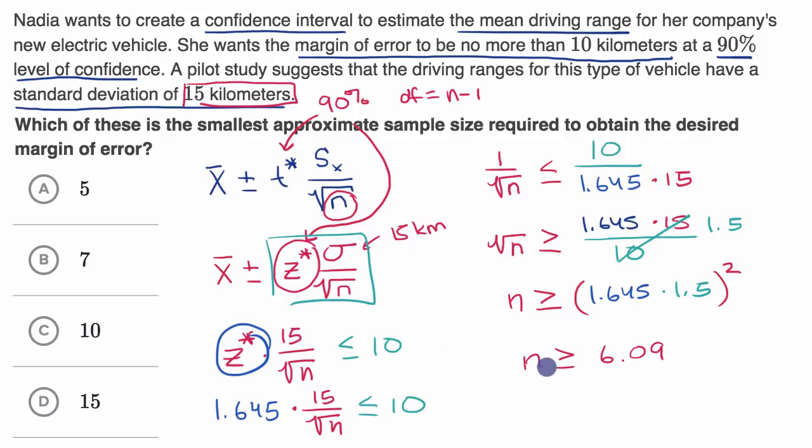And of course our sample size needs to actually be a whole number. So what's the smallest whole number that is larger than 6.09? Well, that's going to be 7. So that would be this choice right over here. This is the smallest approximate sample size required to obtain the desired margin of error.